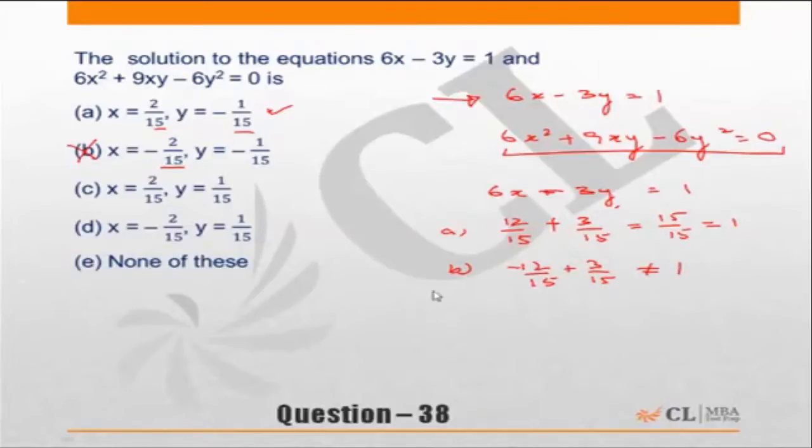We don't even need to check this for the second equation. Choice C 2 by 15 again is 12 by 15 and 1 by 15 is minus 3 by 15, not equal to 1. C is incorrect. D minus 2 by 15 that makes it minus 12 by 15, y is 1 by 15 so minus 3y is minus 3 by 15, again not equal to 1. Choice D is incorrect.